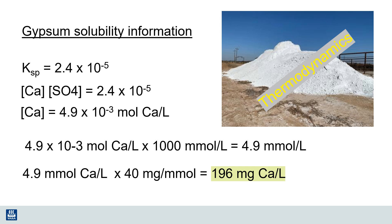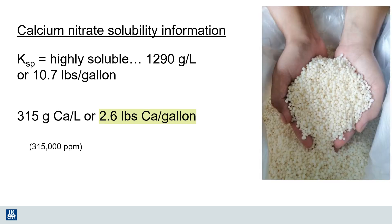Now let's look at gypsum, or calcium sulfate. Going through the same calculations, we see that the solubility of gypsum allows it to release 196 parts per million of calcium. Now let's compare that with calcium nitrate, which will release 2.6 pounds of calcium per gallon — that's 315,000 parts per million. Compare that to less than 3 parts per million of calcium released from limestone.